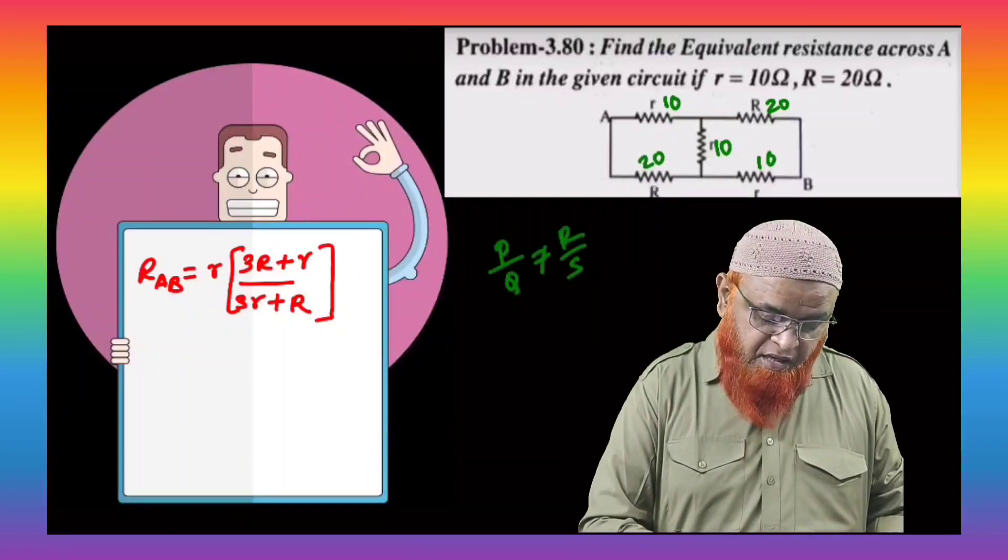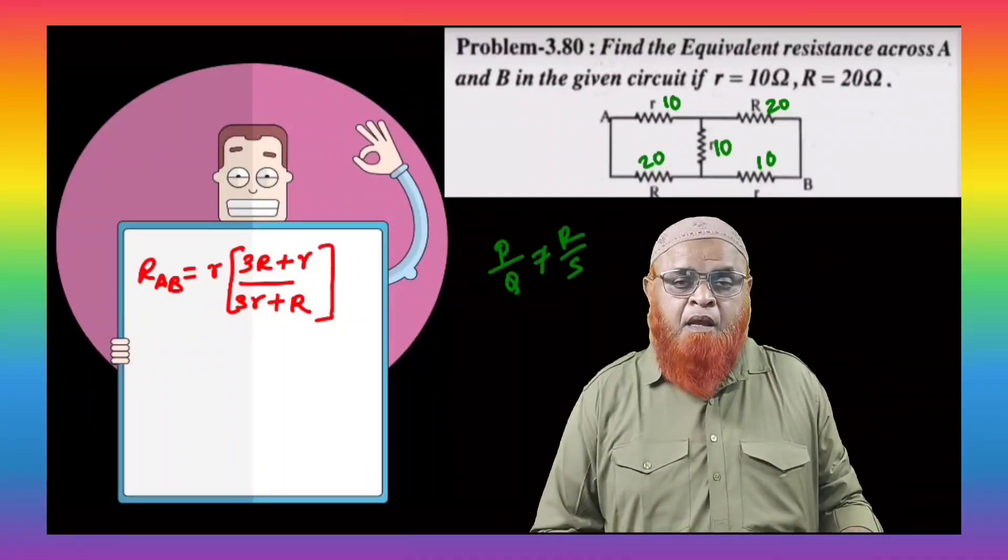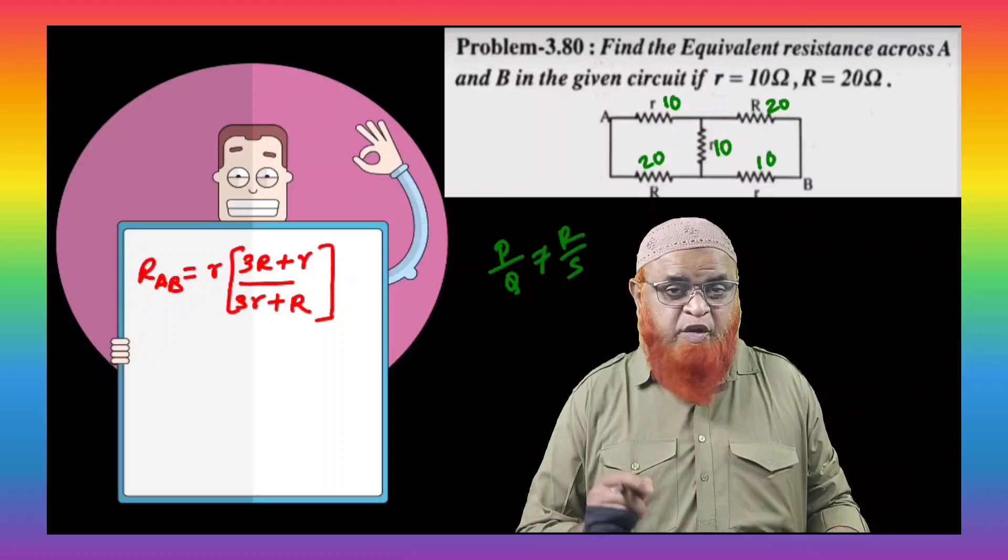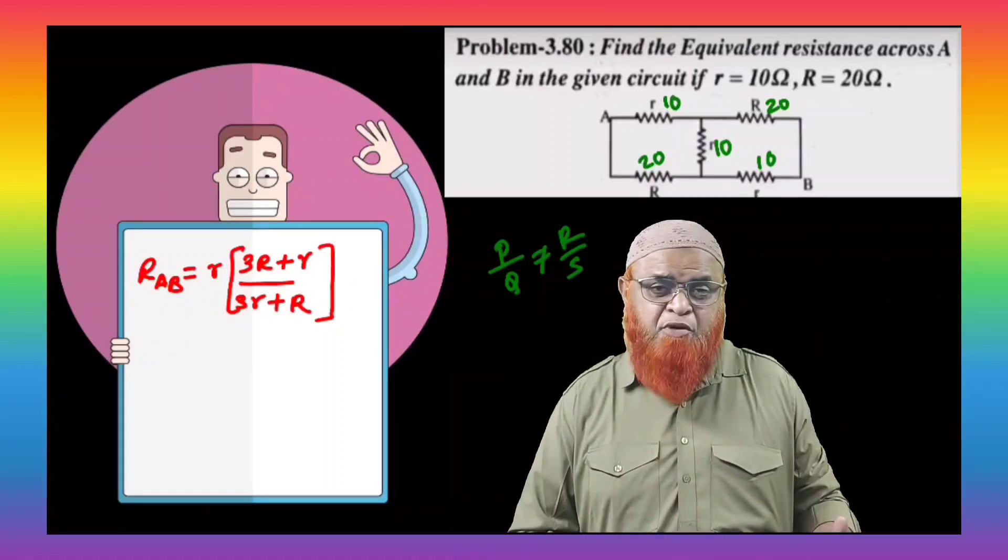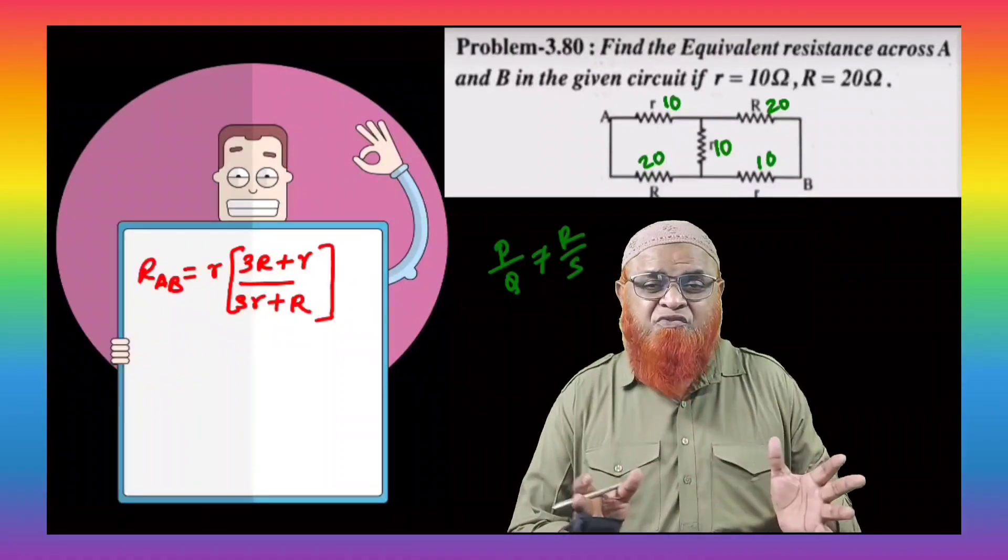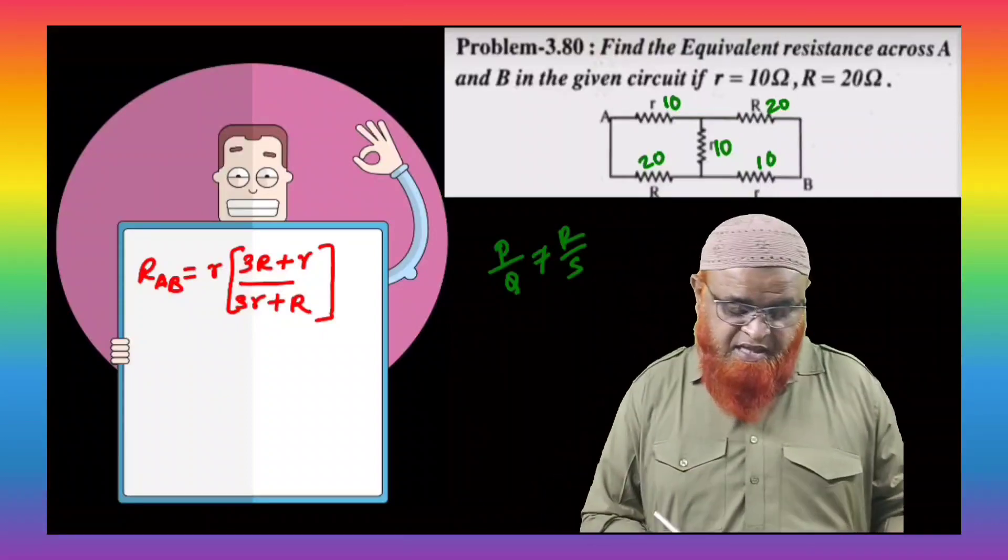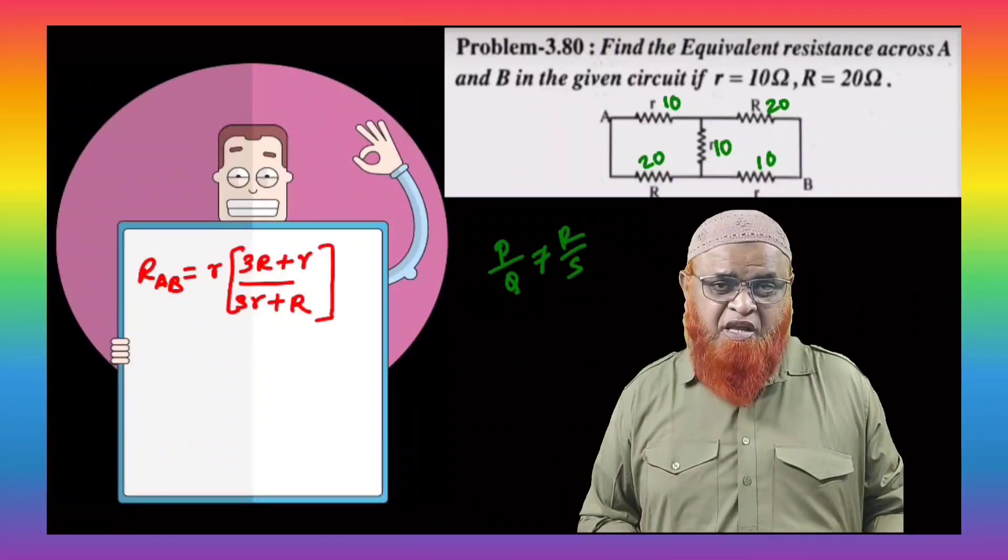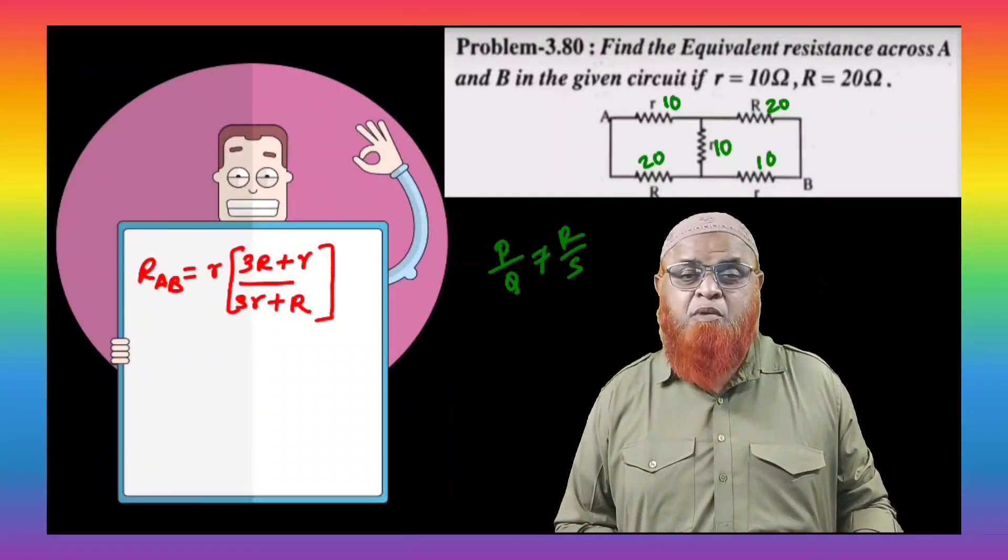But you just see one thing here, one thing you can observe. It is not going to satisfy the case of Wheatstone bridge. Then how can you solve this type of problems in which a symmetry of Wheatstone bridge is not followed? Then for this, there is one shortcut formula here, with which you can solve the problem in fraction of seconds.